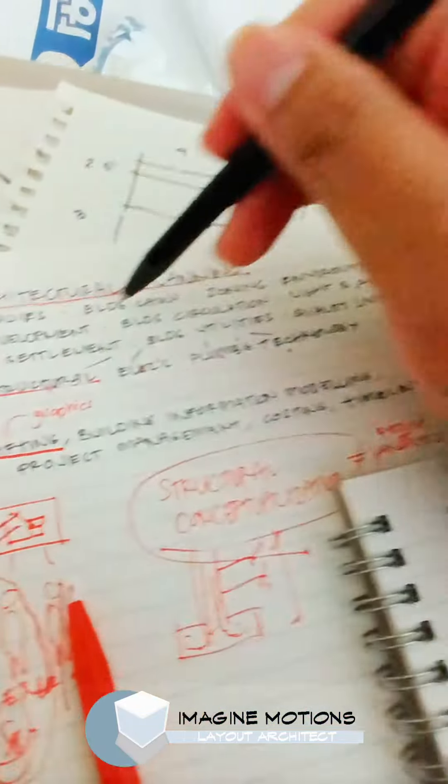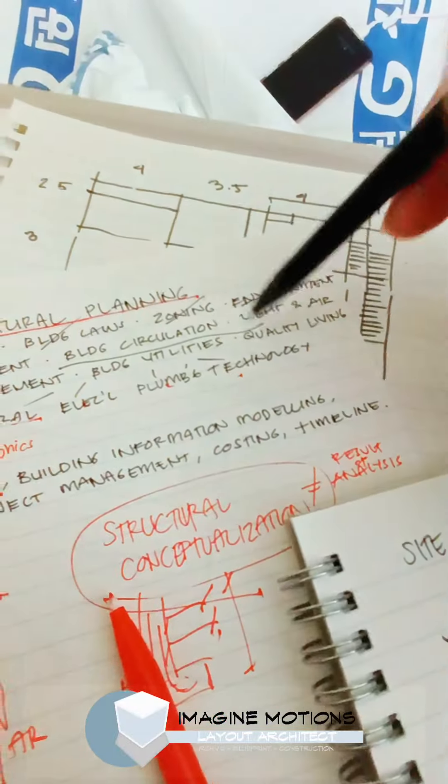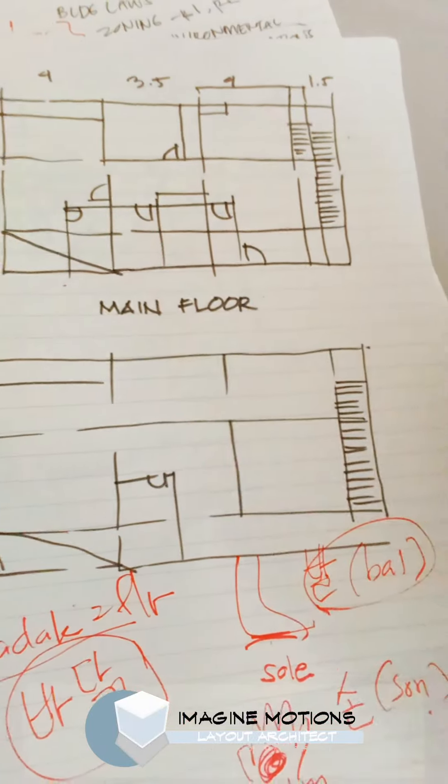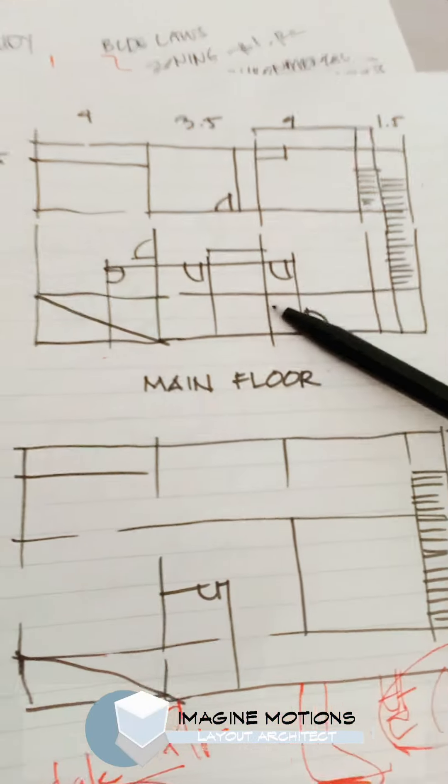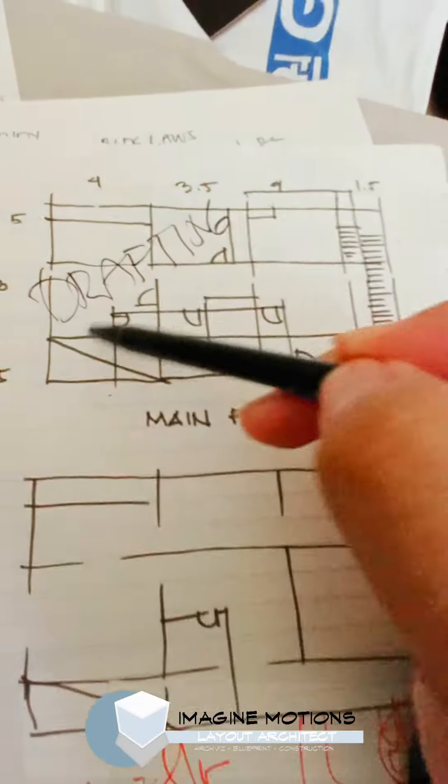Site study, building laws, zoning, environmental, site development. Building circulation. Building circulation and drafting looks like this: bedrooms, sala, kitchen, bathroom, and then the dimensions. That is drafting.